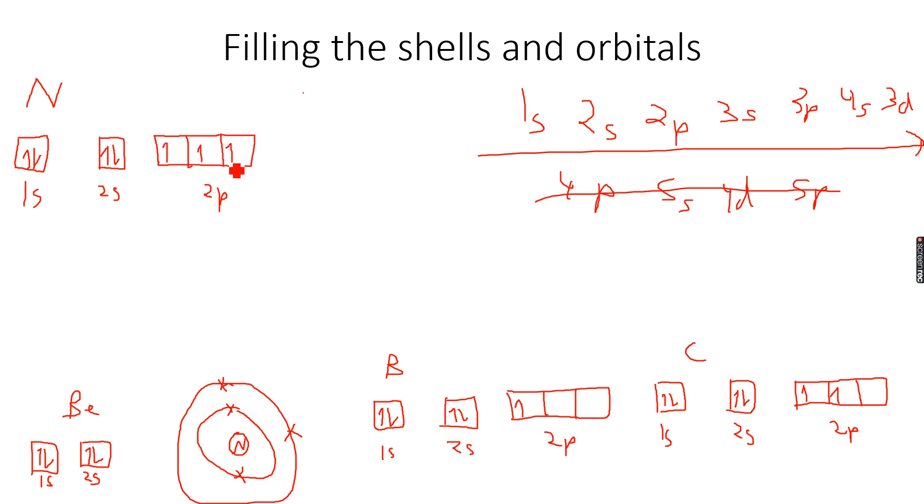This is nitrogen. 1s will fill first, then 2s will fill. When we go to 2px one, then this one. The seventh electron will go into this one because if there is an empty orbital, it will always prefer to go into an empty orbital rather than pairing up. Unless all empty orbitals have been occupied, it will never go into an already filled orbital to prevent repulsion.